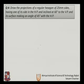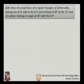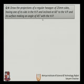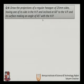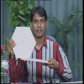Problem number four: draw the projection of a regular hexagon of 25 mm side, having one of its sides in the HP and inclined at 60 degrees to the VP, with its surface making an angle of 45 degrees with the horizontal plane. This involves inclination to both reference planes. The hexagonal plane will first be inclined to the horizontal plane and then to the vertical plane.